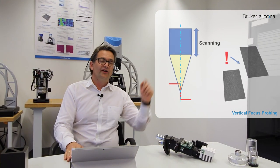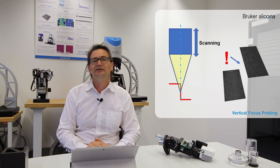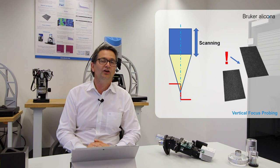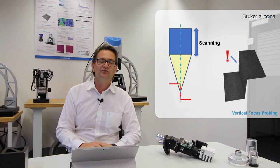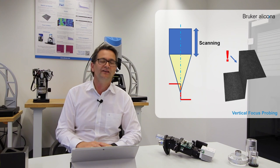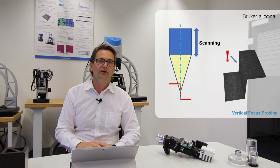Thank you. The solution is vertical focus probing. When we have the optics and use focus variation, we can measure the top surface, the edge break, angles, form, and so on — but we cannot measure the side walls. With the software extension vertical focus probing, we can also measure the side walls. I'll show you how it works. On the first diagram you see the measurement of a height step with our instrument, and you can see that by using focus variation you cannot measure the 90-degree part of the height step. With vertical focus probing, you get that 90-degree part.